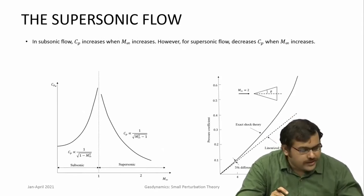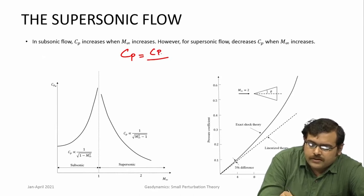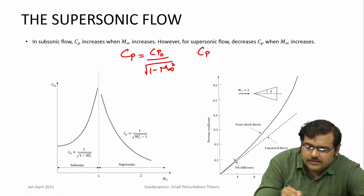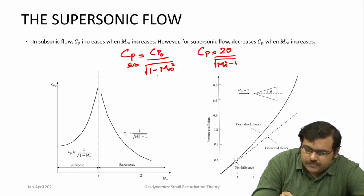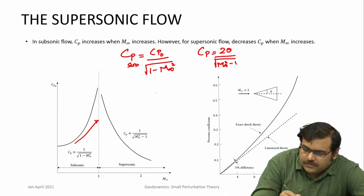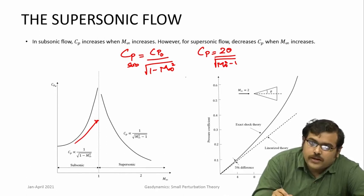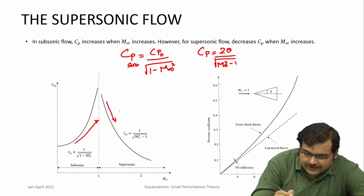In supersonic flow, even in inviscid flow, if you integrate along the x-direction you find there is a drag. This drag arises because in supersonic flow there are waves and the behavior is completely different from subsonic flow; this is what is referred to as wave drag — a pressure-based drag, not a skin friction drag. Comparing Cp expressions: for subsonic flow Cp = Cp0 / sqrt(1 − M∞²), while for supersonic flow Cp = 2θ / sqrt(M∞² − 1). As Mach number increases in the supersonic domain, the denominator increases and Cp decreases.